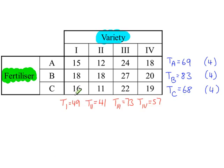And then for the varieties, we're looking at columns this time. The total for variety 1 is 49. And the sample size for variety 1 is 3. And then doing something similar for variety 2, 3, and 4.